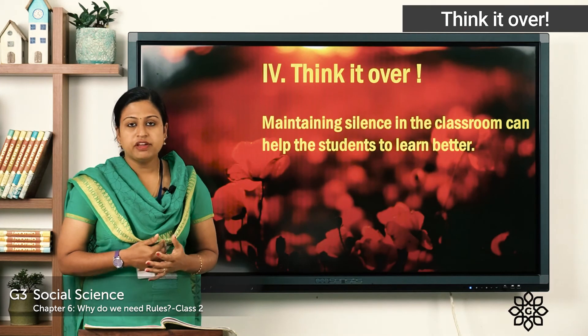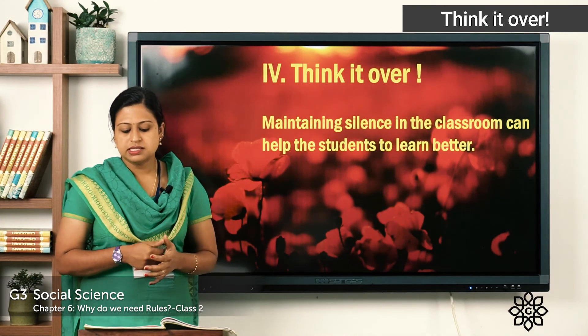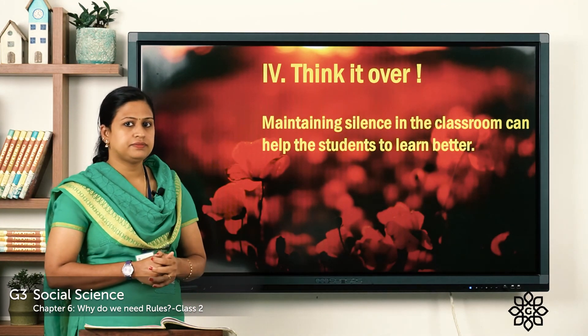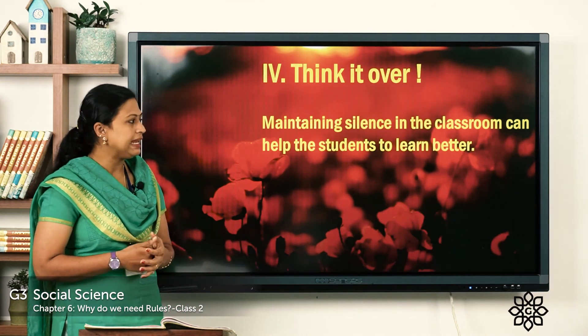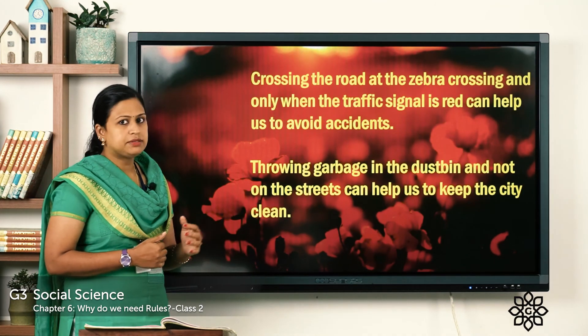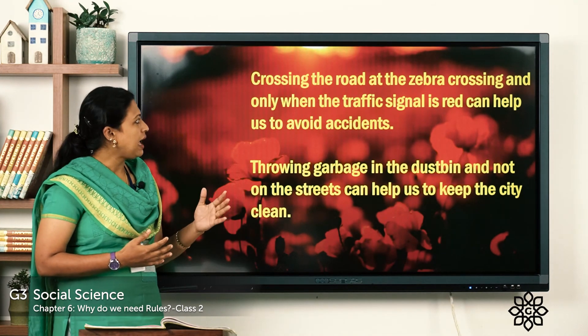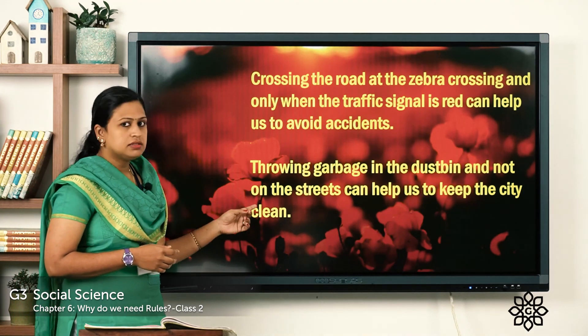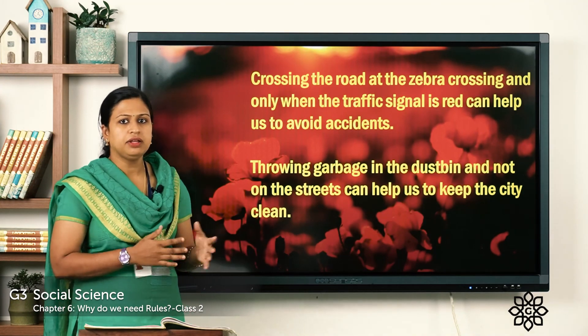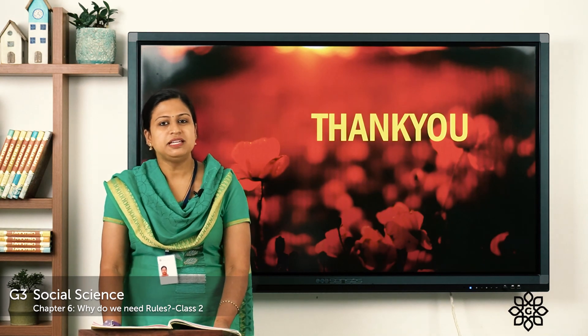Think it over. The question is: when we follow rules, we can live happily and peacefully — support this statement with two suitable reasons. Answer: maintaining silence in the classroom helps students learn better. Crossing the road at the zebra crossing only when the traffic signal is green keeps us safe. Throwing garbage in the dustbin rather than on the street keeps our surroundings clean. On page number 47, you have activity corner — make a list of rules everyone should follow on a trip to see a monument with your class teacher. Write it in your notebook and submit in Microsoft Teams. That's all for today, we'll meet in the next class. Thank you.